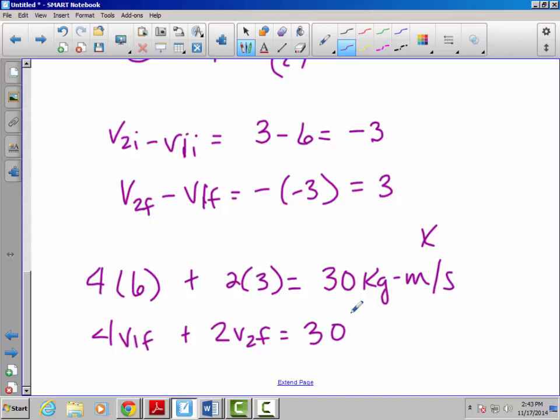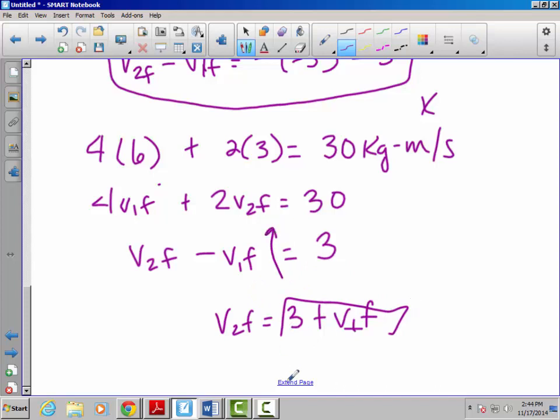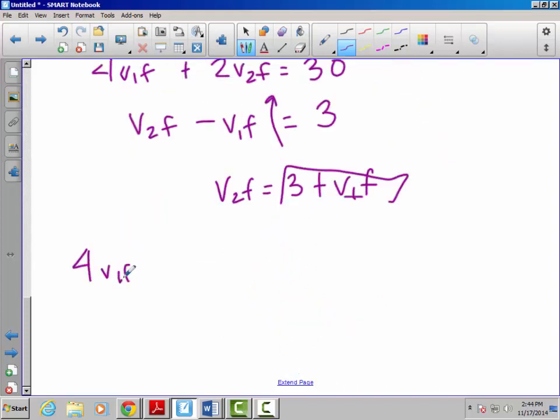So if we put this difference here of 3, we say V2f minus V1f equals 3. So we can do a little bit of equation substitution, and we can say V2f equals 3 plus V1f. And we can substitute this expression into our first one. And we get 4V1f plus 2 times 3 plus V1f equals 30. So that's going to be 6V1f plus 6 equals 30.